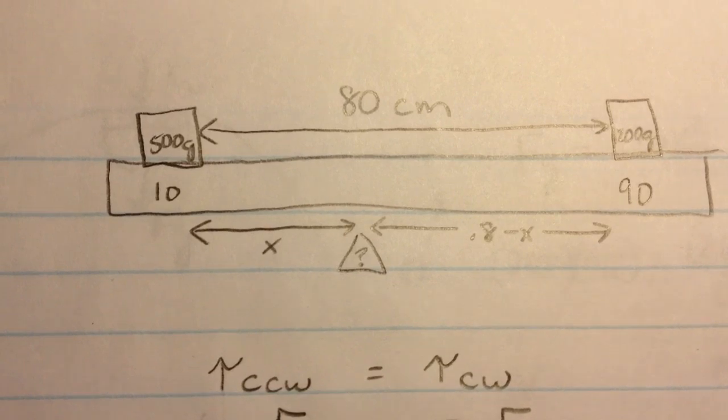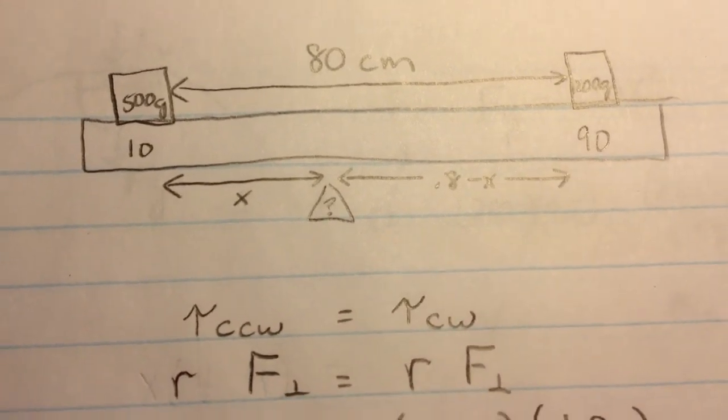So once you get X, you add it to 10 and that will tell you where you are on the meter stick.